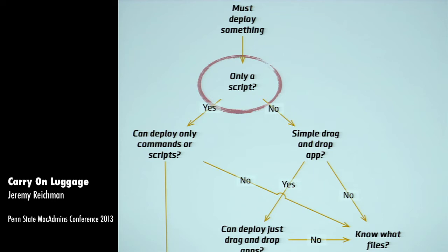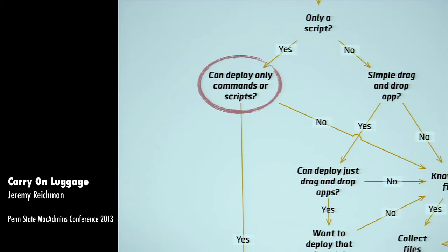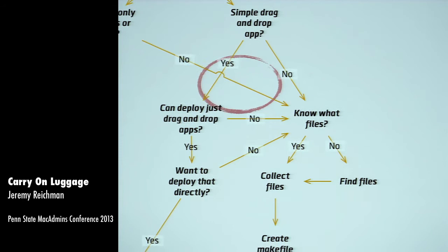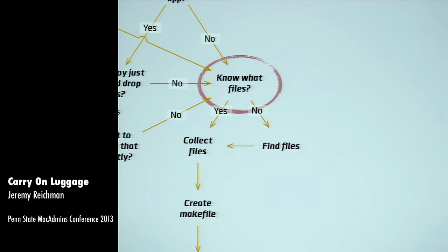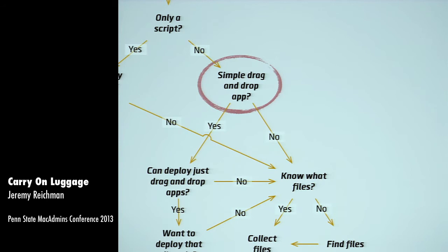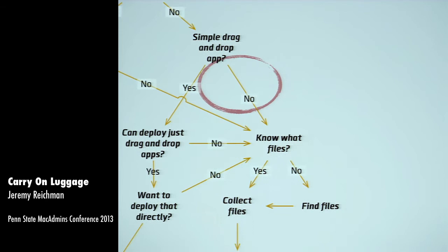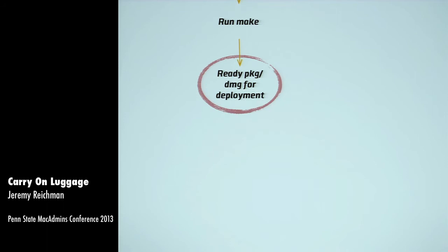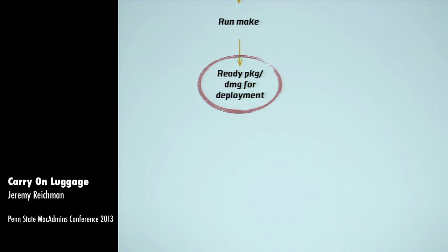Let's go through this chart and figure out where Luggage can fit in. Can we deploy something? Is it only a script? If our deployment system can deploy those things directly — Munki has the concept of a no-package pkginfo file — let's deploy it that way. But oftentimes we are deploying more than that, so we need to know what files are involved. If we're deploying a simple drag-and-drop app or doing almost anything else, we have to know what files to install, collect them together, create a make file, run make, and then ready that for packaging and deployment.